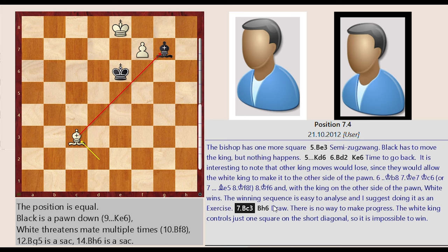8 cent F6, and with the king on the other side of the pawn, White wins. The winning sequence is easy to analyze and I suggest doing it as an exercise.